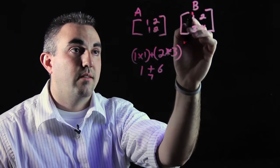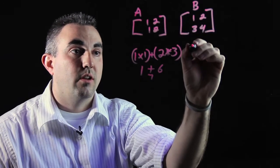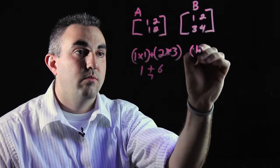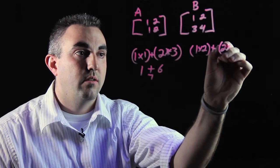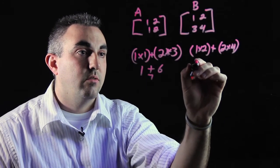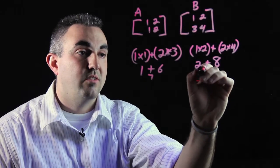Then you're going to take row 1 times column 2. You're going to get 1 times 2 plus 2 times 4. That's going to give you 2 plus 8, which is 10.